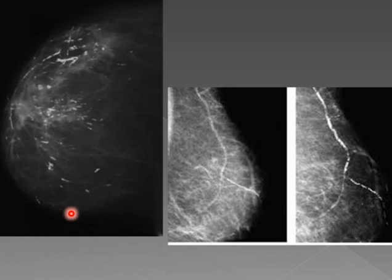This is plasma cell mastitis — it has a definitely broken needle appearance, long needle-like calcifications. This is BIRADS 2, possibly 3.